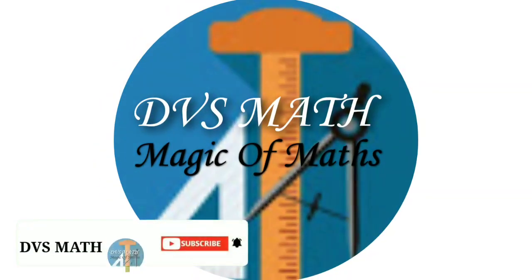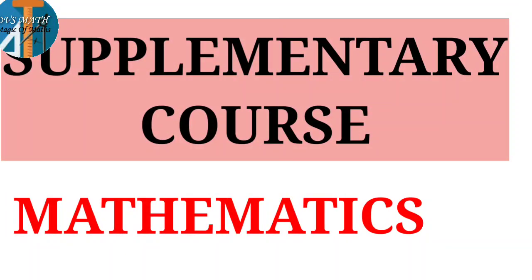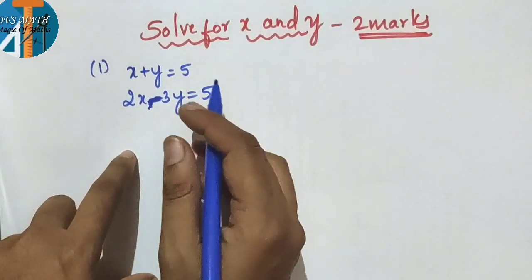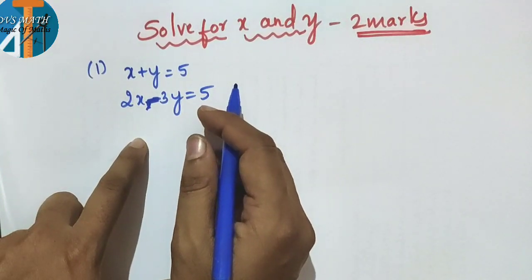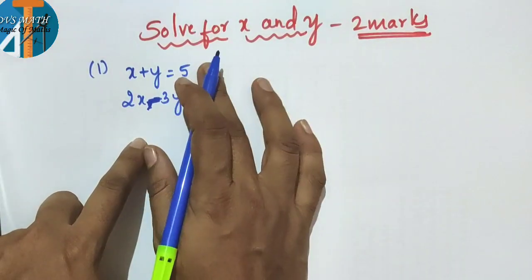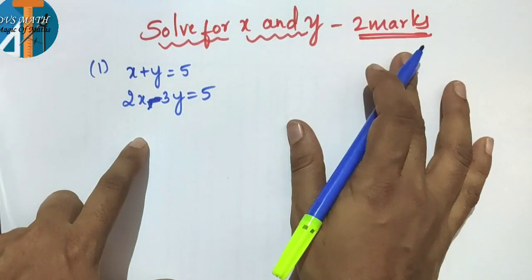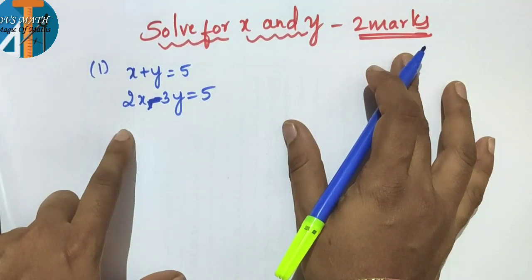Hi everyone, welcome to DVS Math, continuing supplementary course in Mathematics. This is solve for x and y for 2 marks. It is very simple and you can score easily 2 marks.